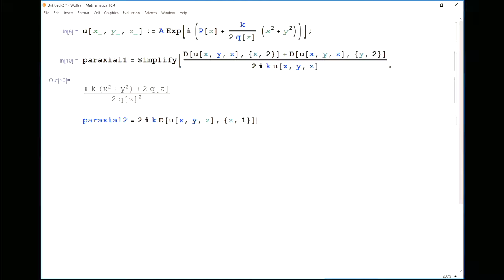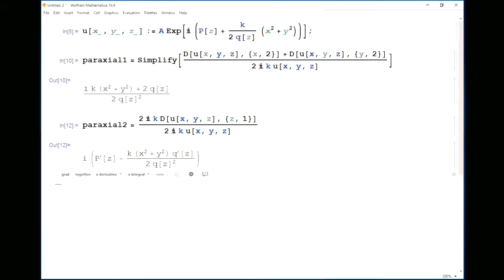I just tell Mathematica which variable I would like to differentiate with respect to and how many times I'd like to differentiate, in this case, once. Again, that doesn't look super pretty. But if we divide through by that common factor, 2i k u x, y, z, we get something that looks a lot nicer.